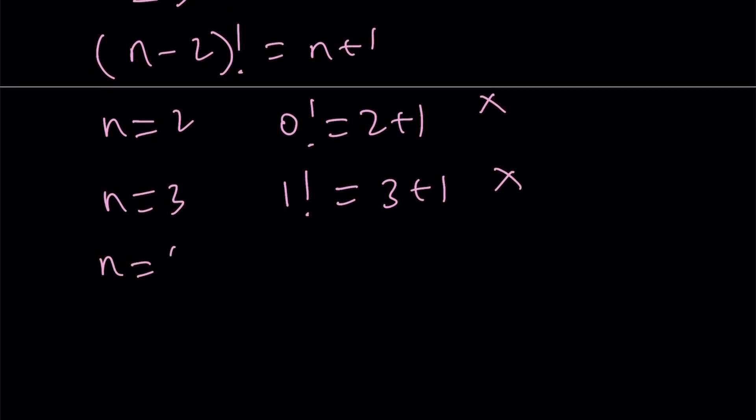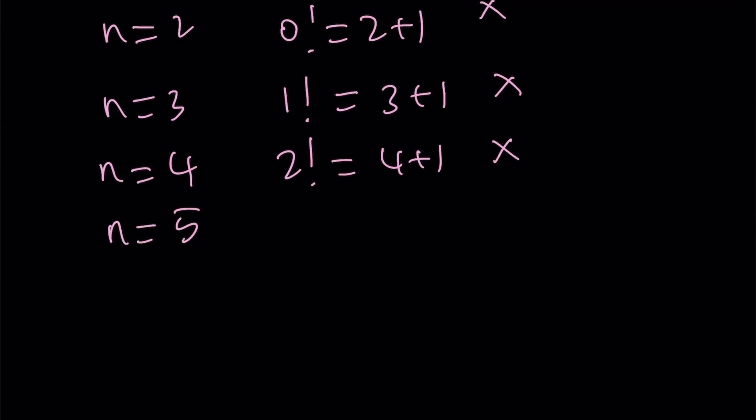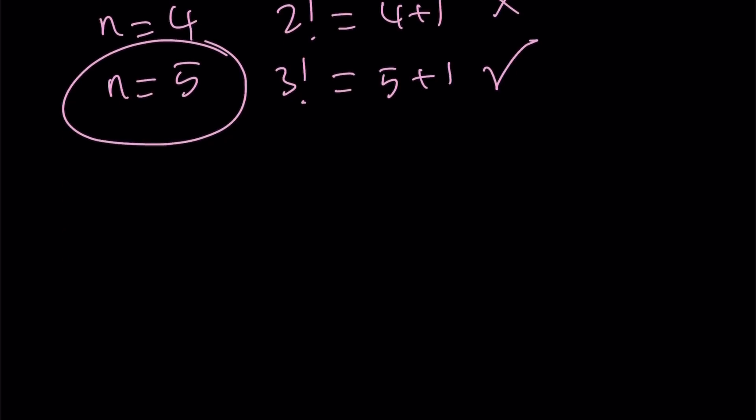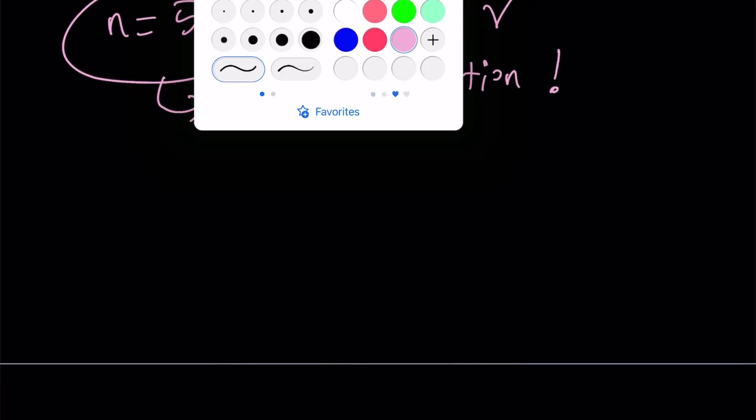How about n equals 4? 2 factorial equals 4 plus 1. Obviously, 5 is not equal to 2 factorial. 2 factorial is 2. This is false as well. Now the last value, n equals 5 is going to give us 3 factorial equals 5 plus 1. 5 plus 1 is 6, and 3 factorial is also 6. This checks, which means n equals 5 is a solution. But that is the only solution, because n greater than 5 is not going to give us any solutions.